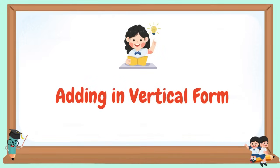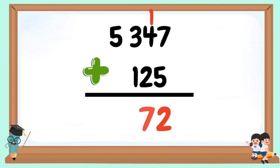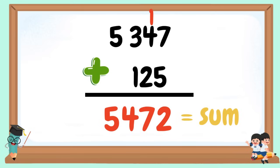Adding in vertical form: 5,347 + 125. 5 + 7 = 12. Bring down 2 and carry 1. 4 + 2 = 6, plus 1 = 7. 3 + 1 = 4. Bring down the 5. Our sum or answer is 5,472.